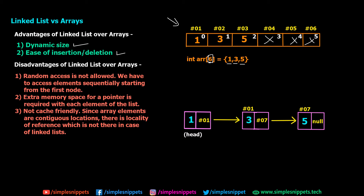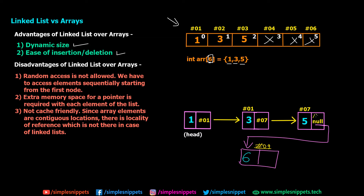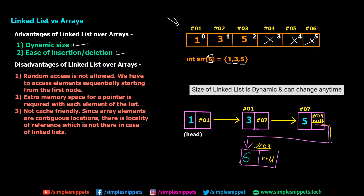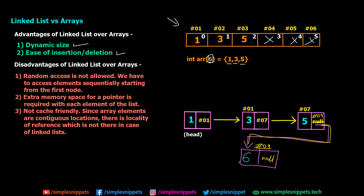So how does linked list solve this? When it comes to dynamic size, let's say you want to add one more node. In a linked list, you can immediately create one more node, point the null pointer to this new node, add the value — say 6 — with address hash 09, and update the previous next pointer to hash 09, removing the null. So dynamically you can easily add or delete nodes on demand, without wasting extra memory. There is a huge flexibility here — this is one major advantage: dynamic size.